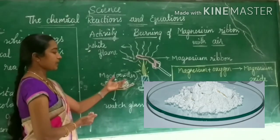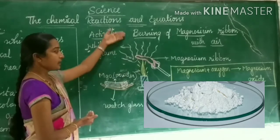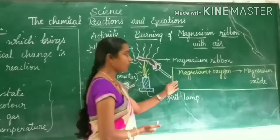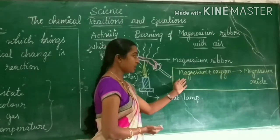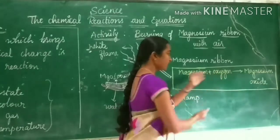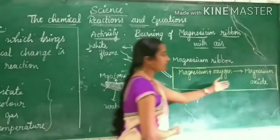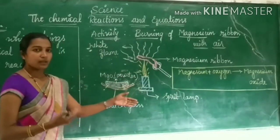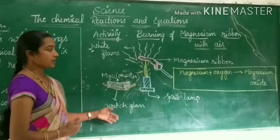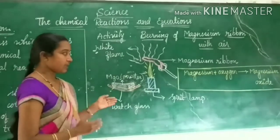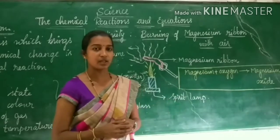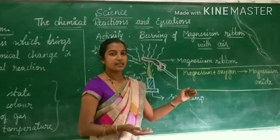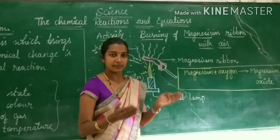The residue is a product called magnesium oxide. Magnesium oxide is in the form of a powder. So here a reaction takes place. This reaction is written in the form of an equation: magnesium reacts with the oxygen present in the atmosphere to produce magnesium oxide. This equation is very helpful for clearly and easily understanding the chemical reaction.